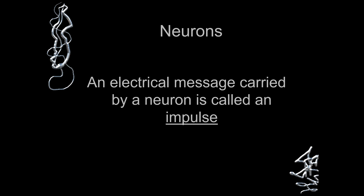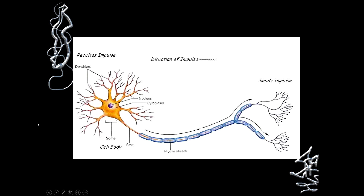These are electrical messages that are carried by a neuron. When these electrical messages are carried through a neuron, it is termed as an impulse. Receiving an impulse is the function of the dendrite, and sending an impulse is the function of the axon.